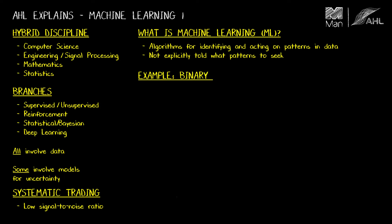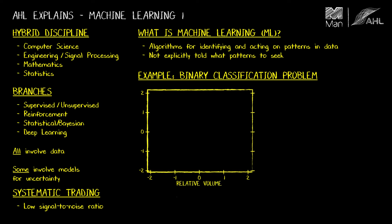OK, let's have a look at an example. And this is going to be a binary classification example. So I'm going to draw a diagram with two axes. I'm going to call those Predictor 1 and Predictor 2. And Predictor 1 might be today's traded volume relative to a normal day. And Predictor 2 might be today's momentum value.